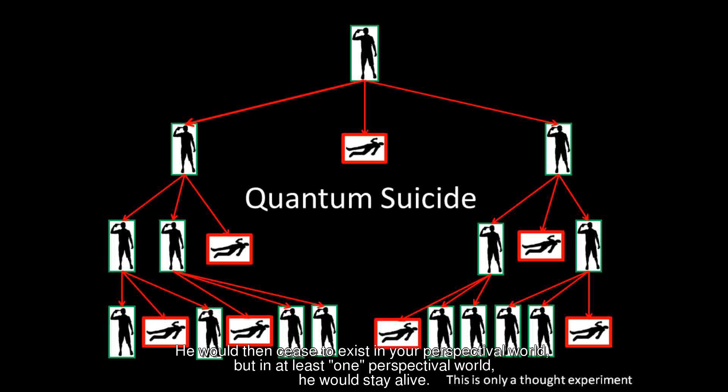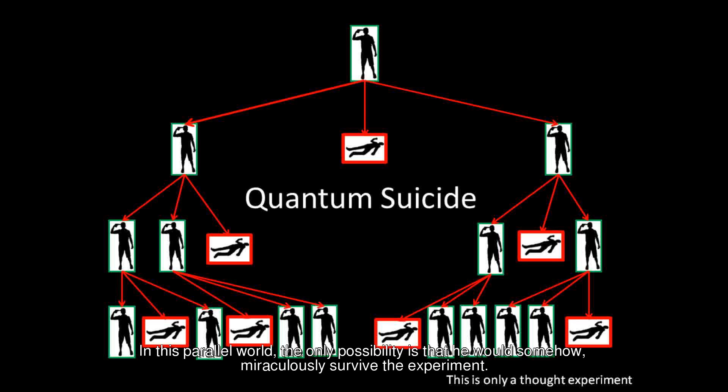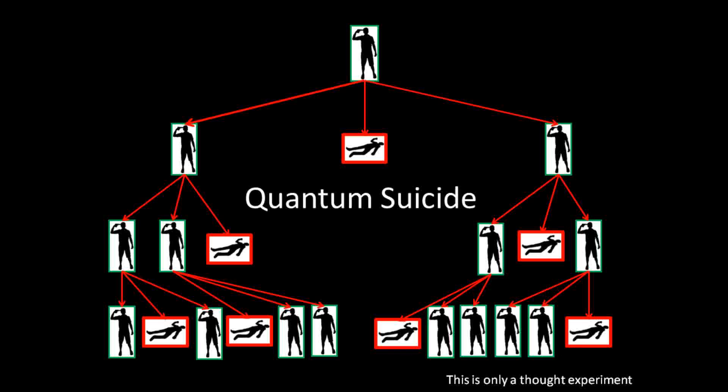He would then cease to exist in your perspectival world, but in at least one parallel world, he would stay alive. In this parallel world, the only possible outcome is that somehow he miraculously survived the experiment. Because the world where he died, he ceased to exist for him, and he can no longer experience it.